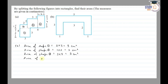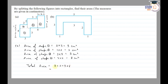Area of shape 4: the dimensions are 2 into 4, length into breadth, so we have 8 cm². Total area equals 9 plus 2 plus 9 plus 8. That gives us 9 plus 2 is 11, plus 9 is 20, plus 8 — so the total area is 28 cm².